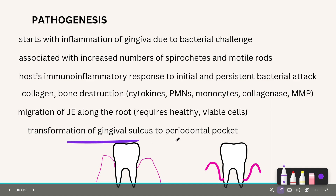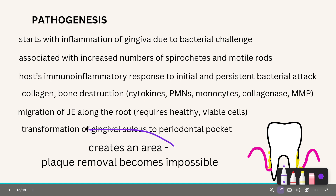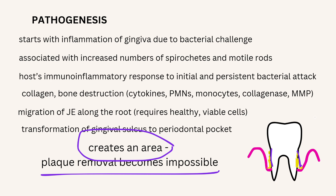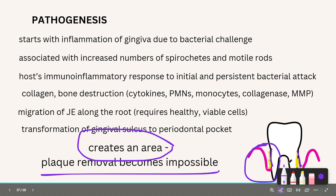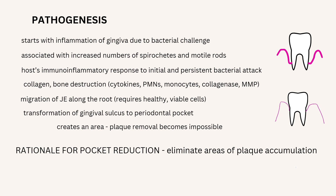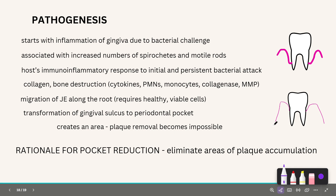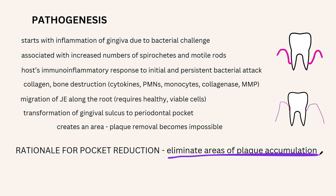The transformation of the gingival sulcus into a periodontal pocket creates an area where plaque removal becomes impossible — once plaque starts forming in the pocket, it cannot be removed manually by the patient and needs professional intervention through root planing. This forms the rationale behind pocket elimination or pocket reduction procedures: we must eliminate areas of plaque accumulation, and that is the basis for treating a periodontal pocket.